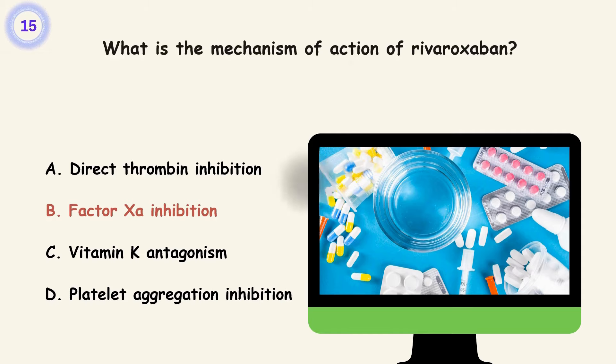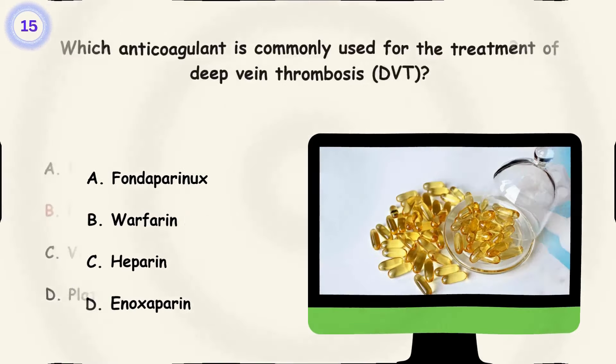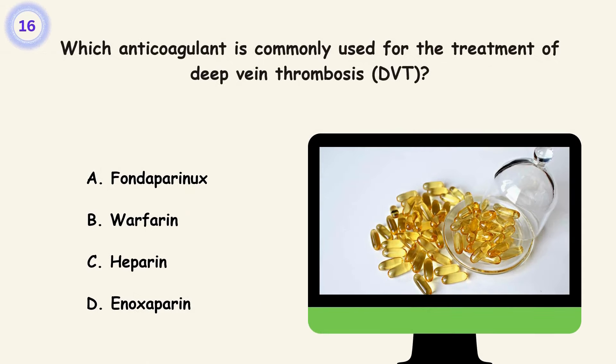Question 16. Which anticoagulant is commonly used for the treatment of deep vein thrombosis, DVT? A. Fondaparinux. B. Warfarin. C. Heparin. D. Enoxaparin. Answer is D. Enoxaparin.